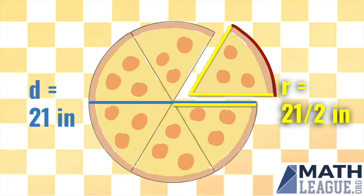The whole circumference of the pizza is going to be the diameter times pi, or 21π.